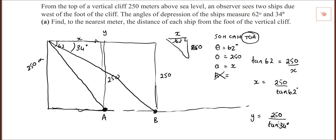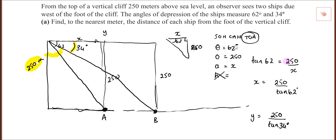When we did this there was a problem. The problem was that you put these angles in the wrong place — you put them here rather than in the correct position. The problem with that is then the 250 is not the opposite side, it becomes the adjacent side, so you put it in the formula the wrong way.